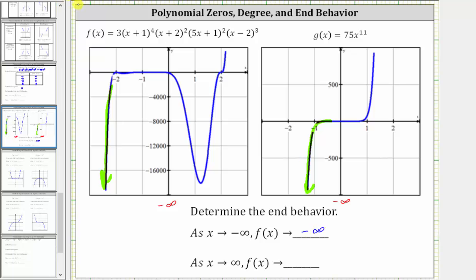As x approaches positive infinity — moving to the right — the function goes up without bound, meaning f of x approaches positive infinity. The same is true for g of x equals 75x to the eleventh: as x approaches infinity, f of x increases without bound and approaches positive infinity. I hope you found this helpful.